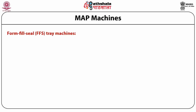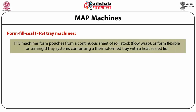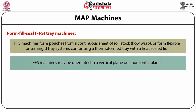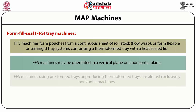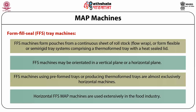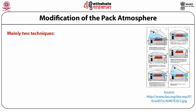Form Fill Seal (FFS) machines form pouches from a continuous sheet of roll stock, or form flexible or semi-rigid tray systems comprising a thermoformed tray within a heat-sealed lid. FFS machines may be oriented in a vertical or horizontal plane. FFS machines using pre-formed trays or producing thermoformed trays are almost exclusively horizontal machines, and horizontal form fill seal MAP machines are used extensively in the food industry.